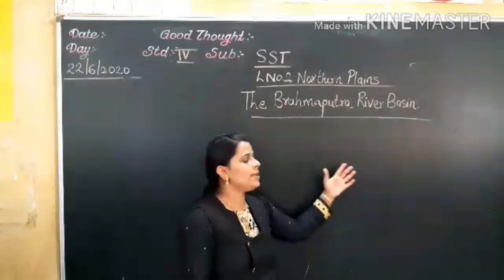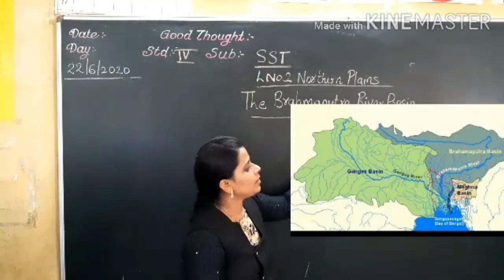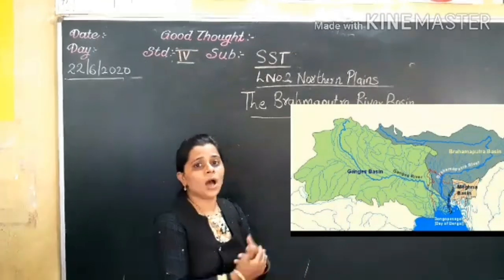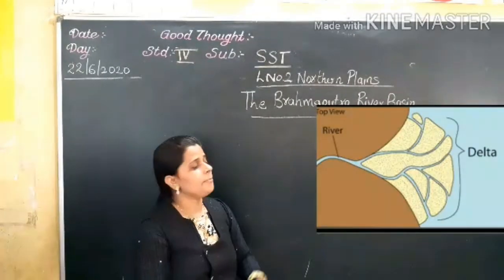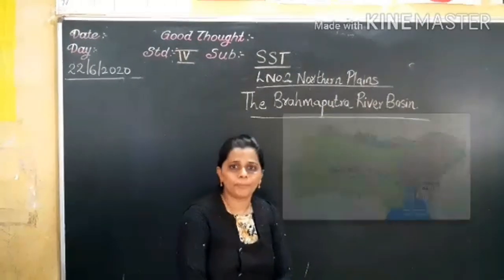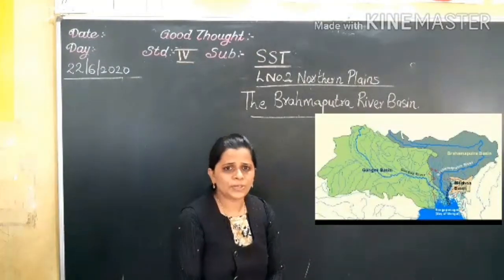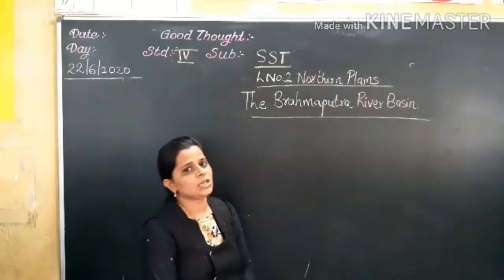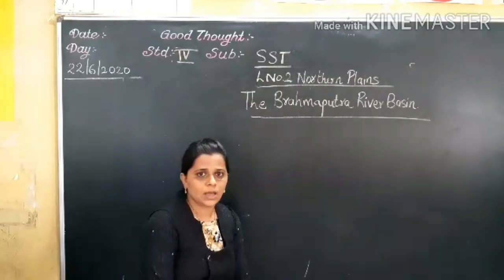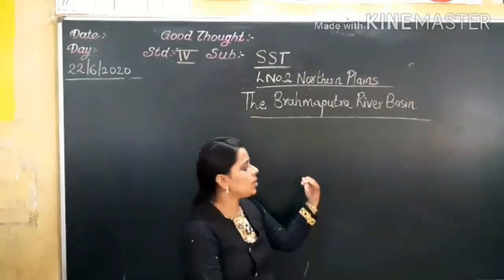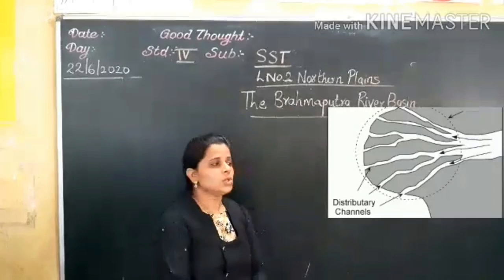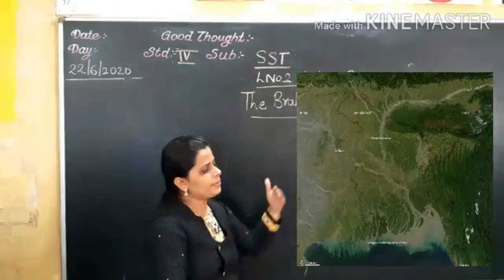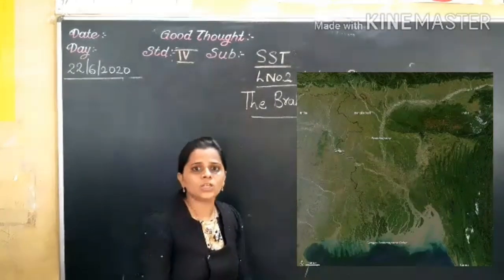When the Brahmaputra and the Ganga meet, they form a large delta before entering the Bay of Bengal. Hope till here you have understood how the Brahmaputra enters India, what names it is known by in different places, and the concept of distributaries. When Brahmaputra and Ganga meet before entering the Bay of Bengal, they form a large delta.